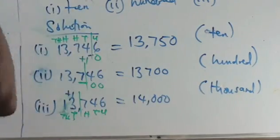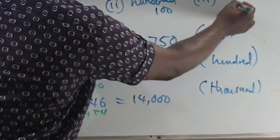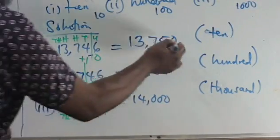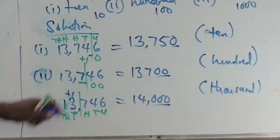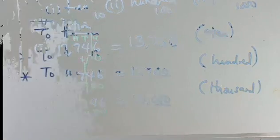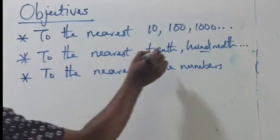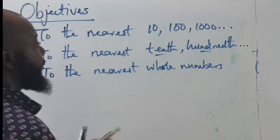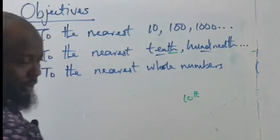Take note of this: when we talk about 10, it has one zero — 1, 0. 100 has two zeros. 1000 has three zeros. So when you round to the nearest 10, we have one zero at the end. Nearest 100 — two zeros at the end. Nearest 1000 — three zeros at the end. That is how rounding numbers works.